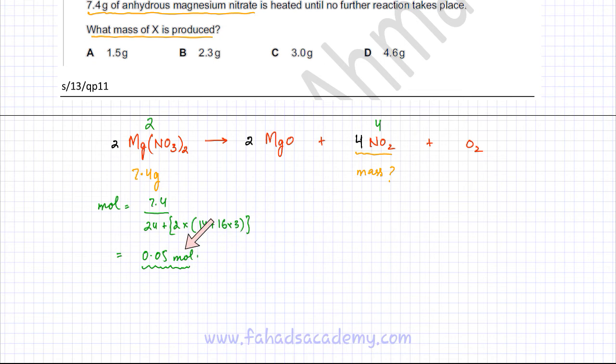So if you have 0.05 moles of magnesium nitrate, the moles of NO2 are going to be twice that amount. The moles of NO2 are 0.05 multiplied by 2, which equals 0.1 moles.